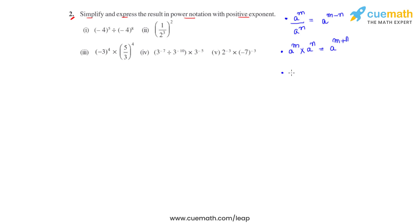The third law: a raised to negative m — where a base has been raised to a negative power. To convert it to a positive power, we write it as 1 over a raised to m. Now let's get on to solving the problems given to us.